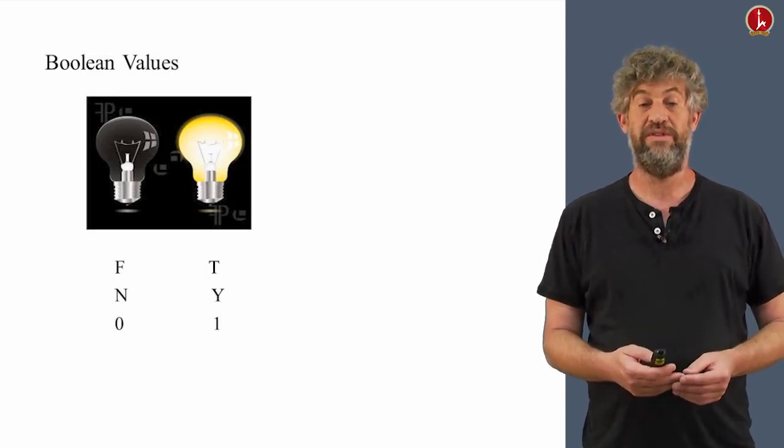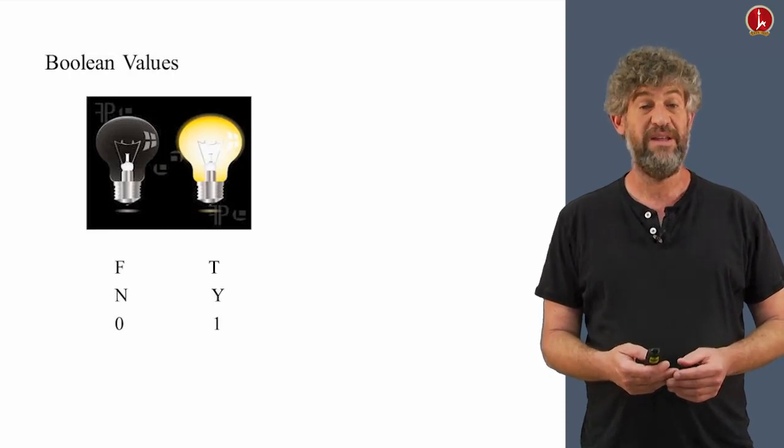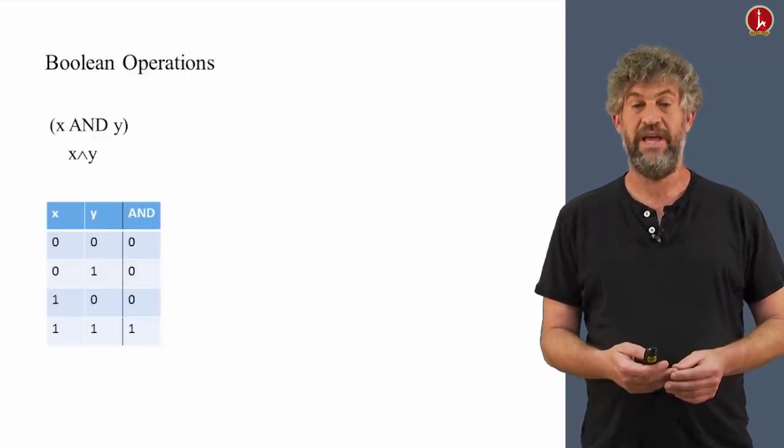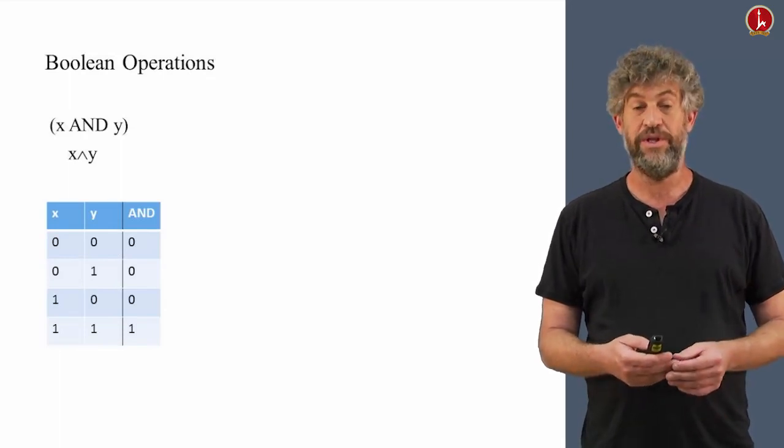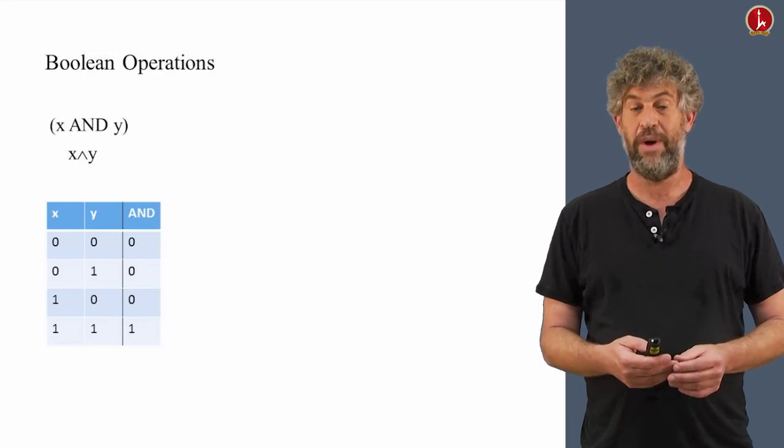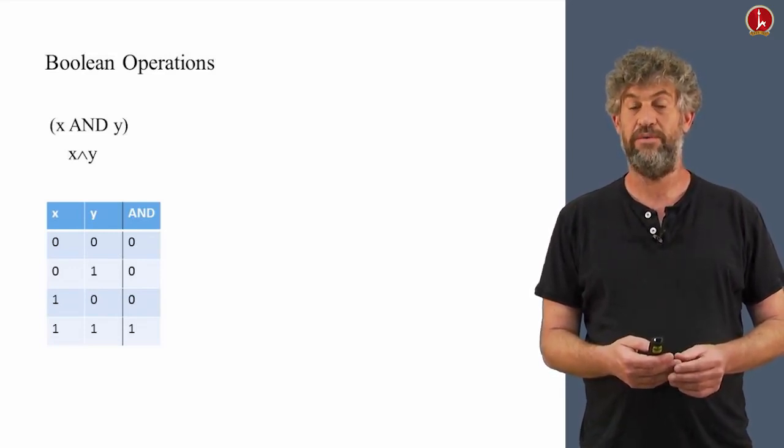What can we do if we only have zeros and ones? We can do some basic operations on them. For example, the AND operation takes two zero-one signals and returns one only if both of them were one. So if you have zero and one, the result is zero. But if you have one and one, the result is one.